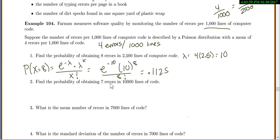Find the probability of obtaining 7 errors in 10,000 lines of code. So you could do 4 out of 1,000 equals λ over 10,000, or λ equals 4 times 10 because it's 10 times as much as the original, so 40.